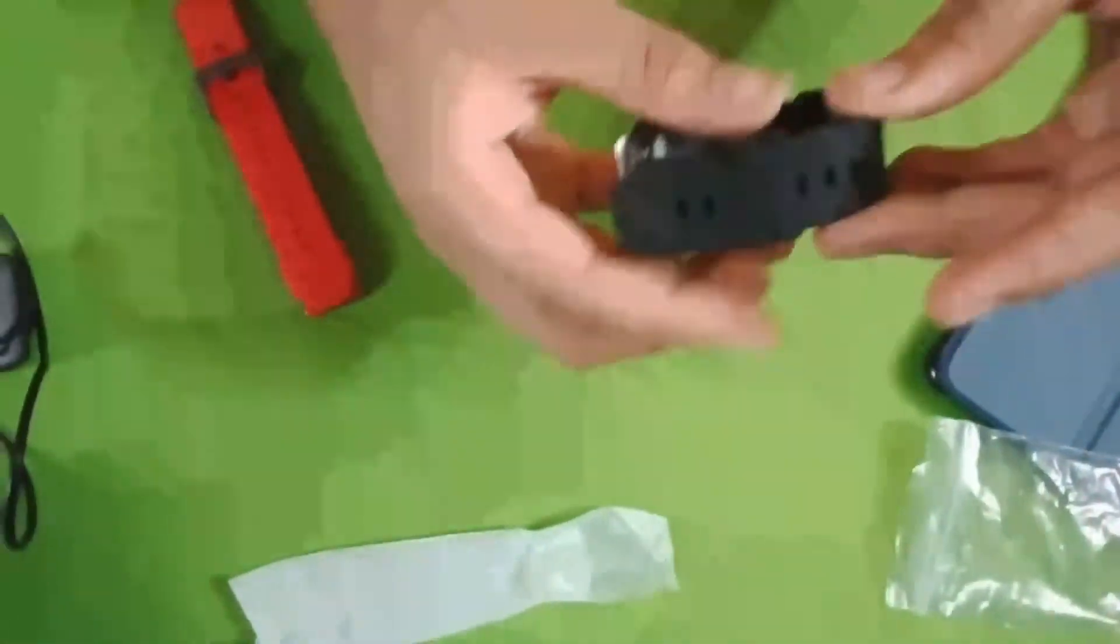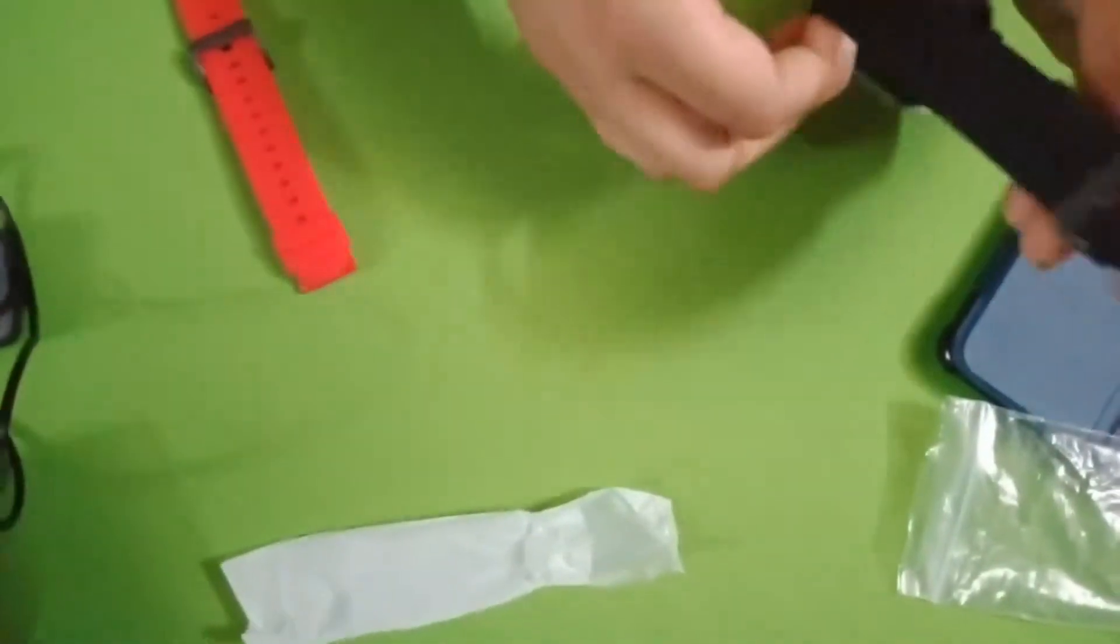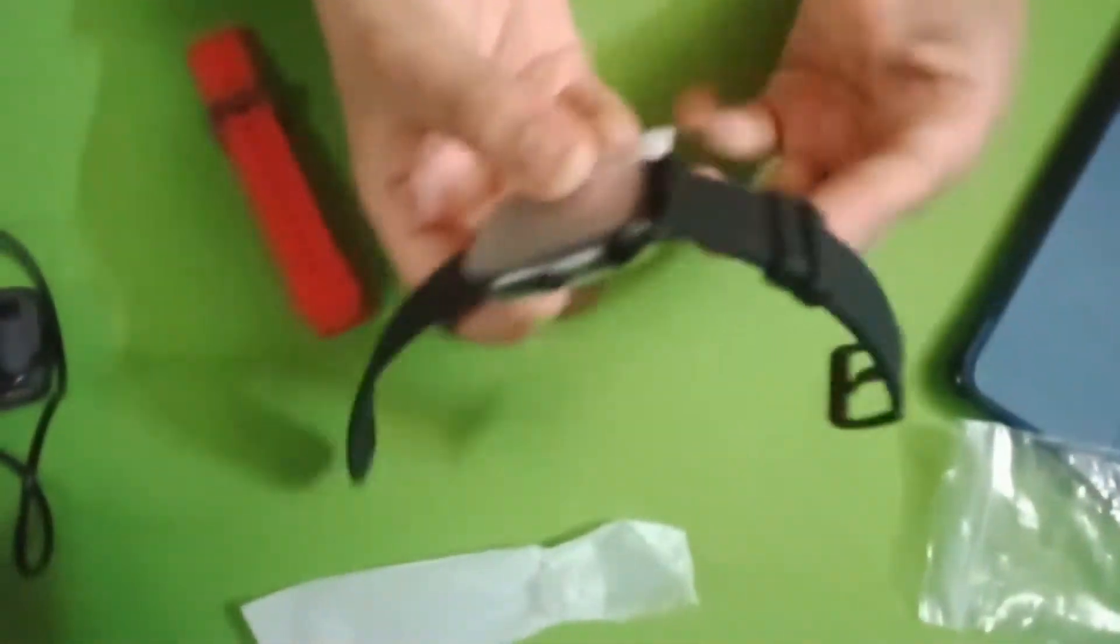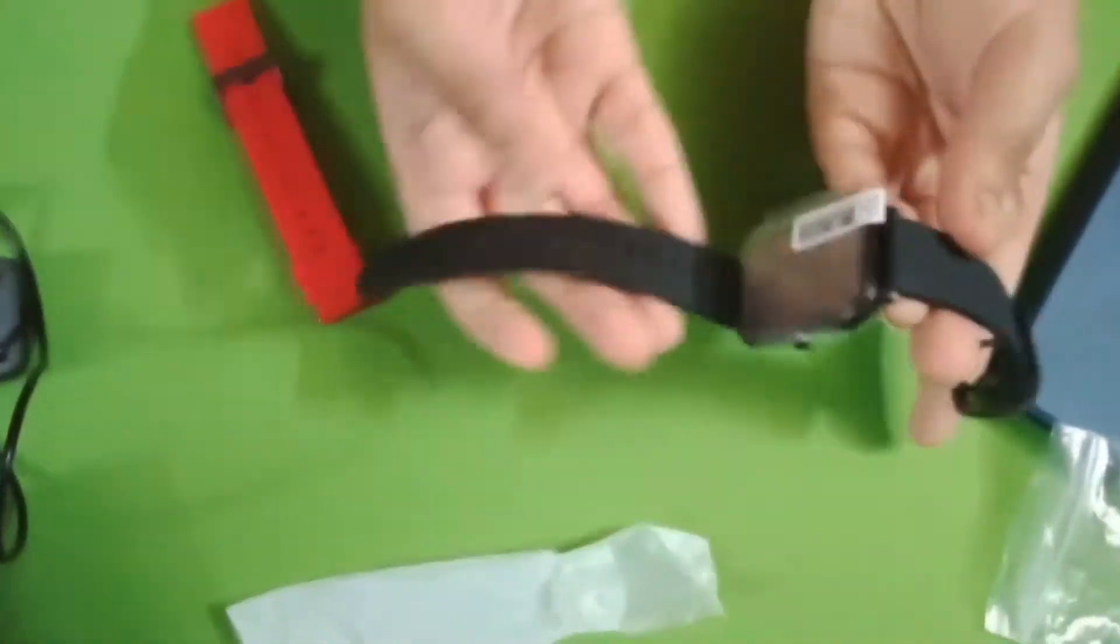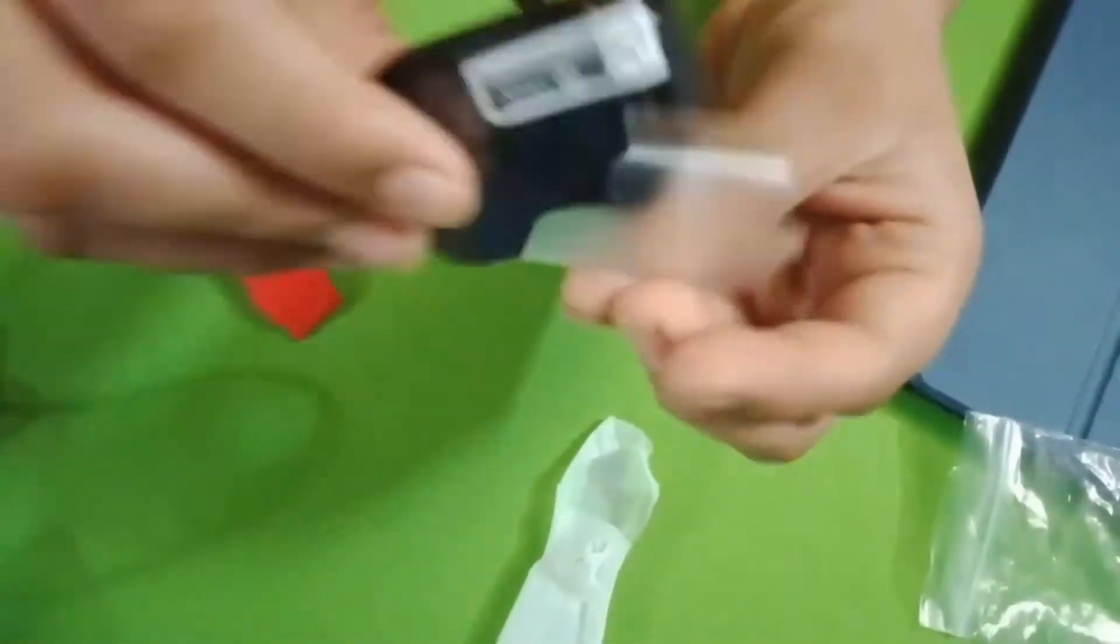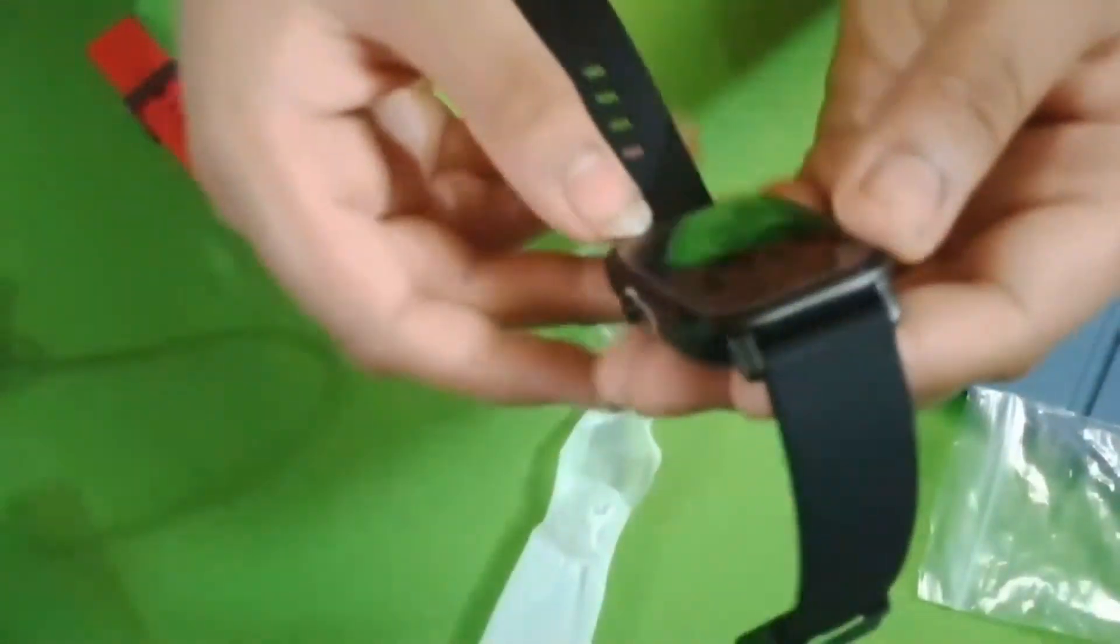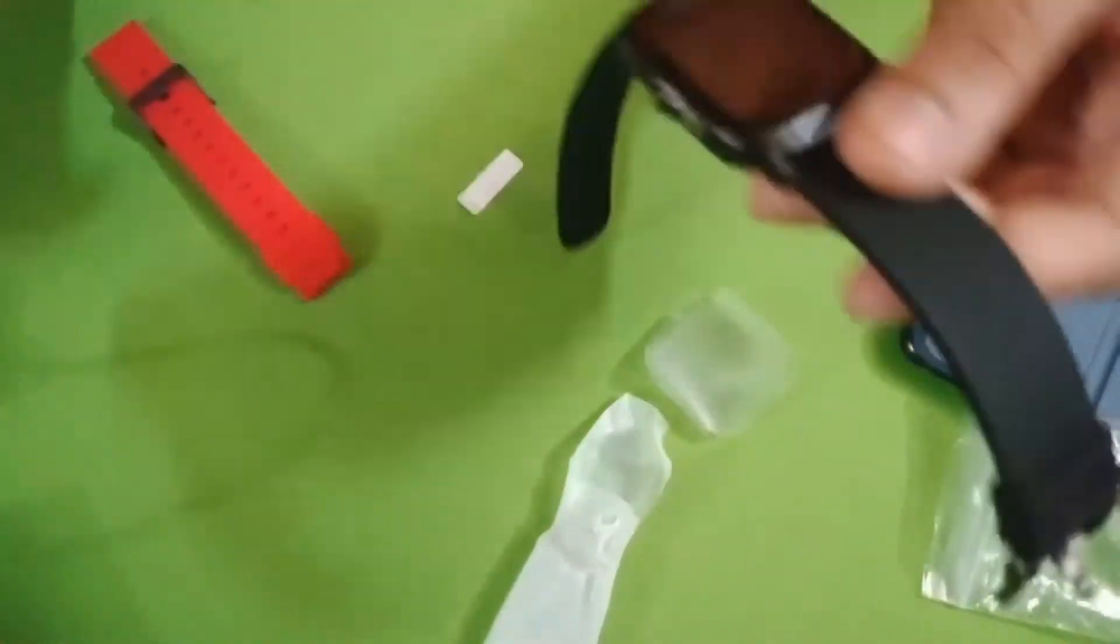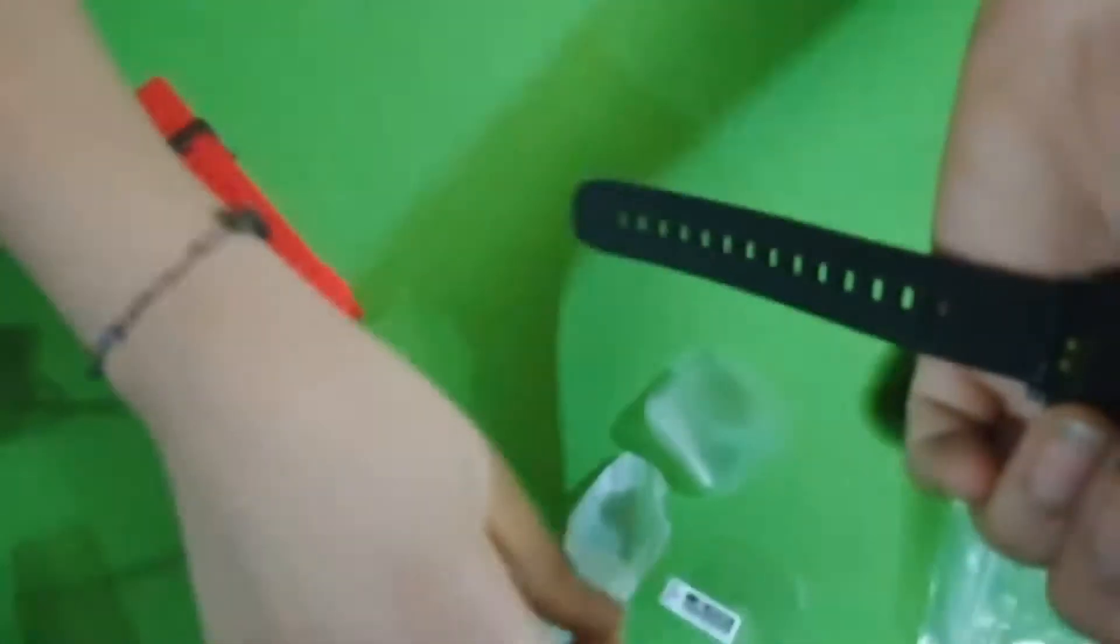So let's check out the watch itself. The quality of the straps are really good. Here is an overview of the watch. Watch feels very nice in hand and weighs about only 44 grams. It is very lightweight and very comfortable to wear. So let me just peel off the plastic covering. The screen looks very nice. And there is some plastic covering near the power button so that the watch should not turn on while getting shipped.